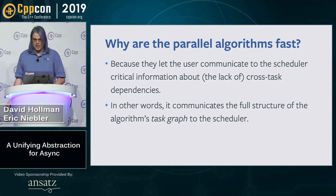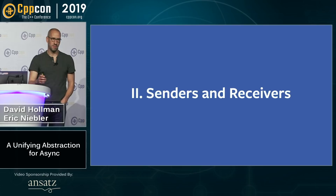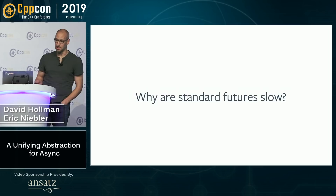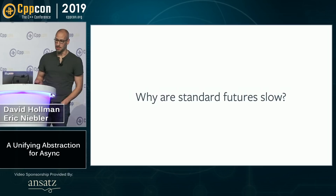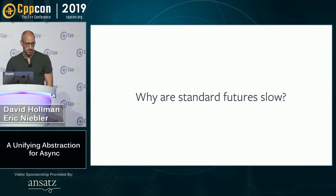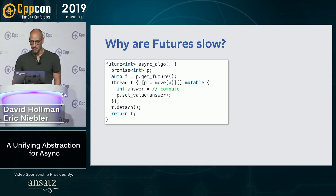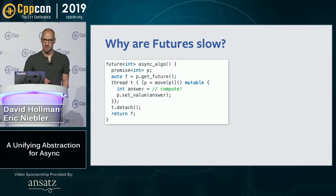Eric's going to now jump back in and build from the ground up this universal abstraction, and hopefully tie back in to show why this is a more universal approach. I'd like to stick a pin in this discussion and talk about the asynchronous abstraction we've been referring to, which we call senders and receivers. I'll illustrate what senders and receivers are by first talking about what they aren't—futures and promises. I will posit that futures are slow. Why? Why are futures slow?